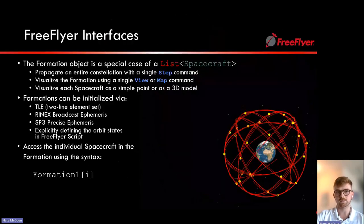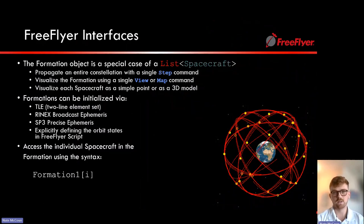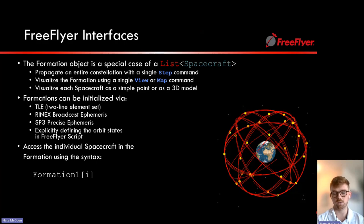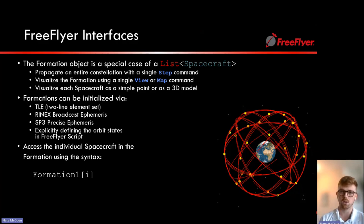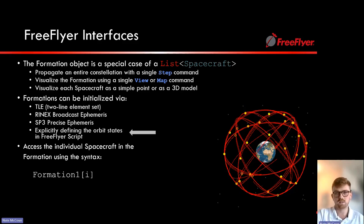FreeFlyer has a formation object, which is a special case of a list of spacecraft. This allows you to propagate an entire constellation with a single step command, visualize the formation using a single view or map command, and visualize each spacecraft as a simple point or as a 3D model with a tail. Formations can be initialized via a TLE, a RINEX broadcast ephemeris file, an SP3 precise ephemeris file, or by explicitly defining the orbit states in FreeFlyer script.